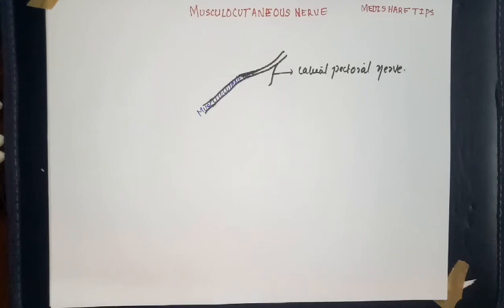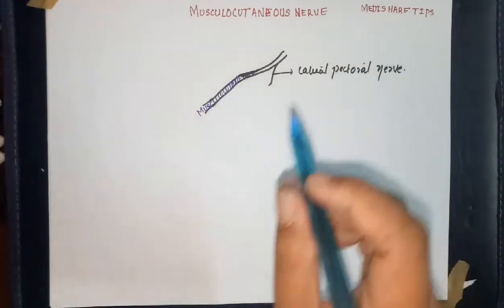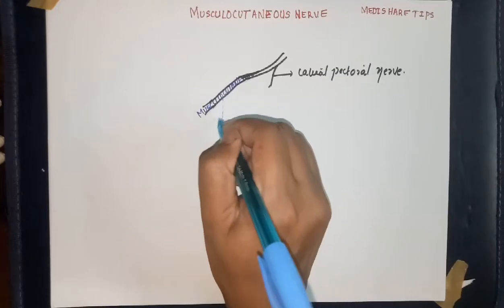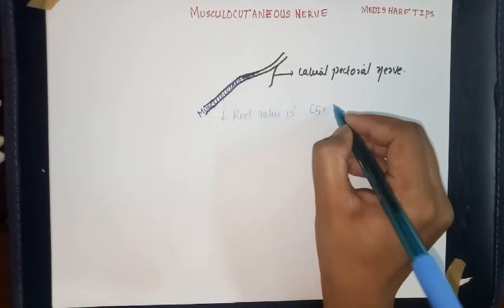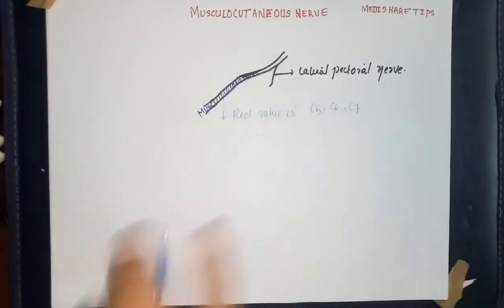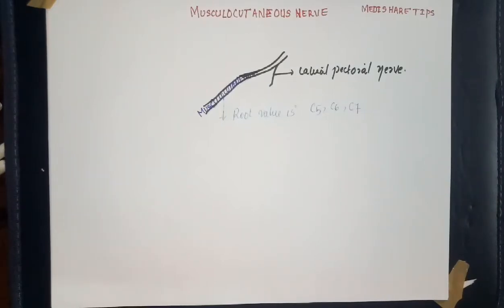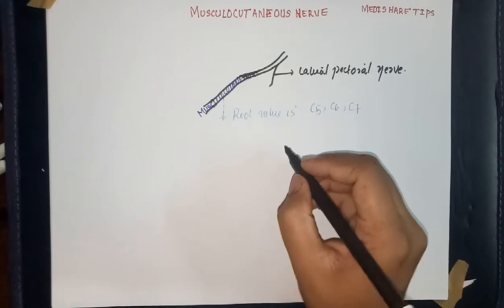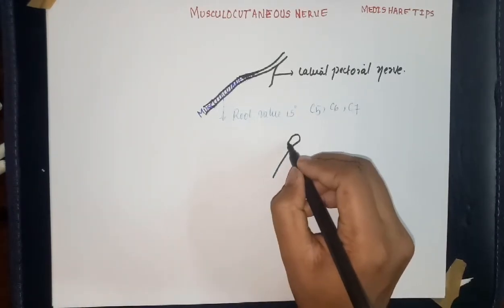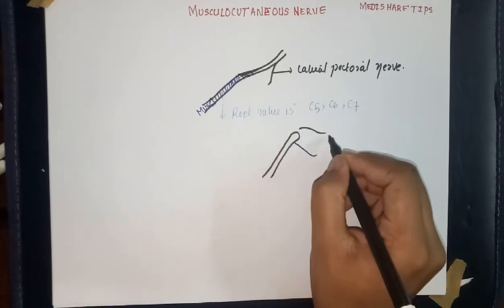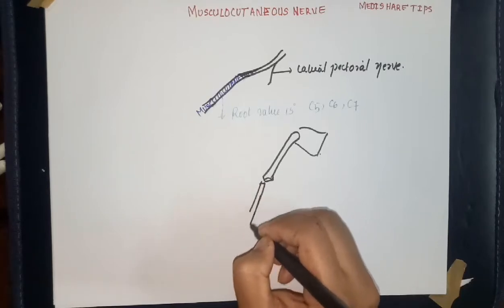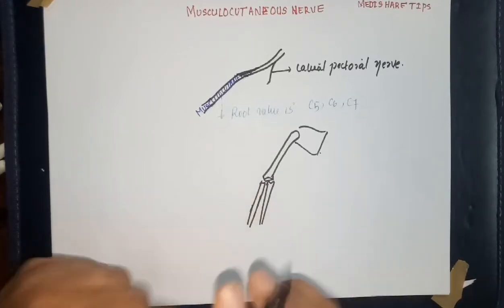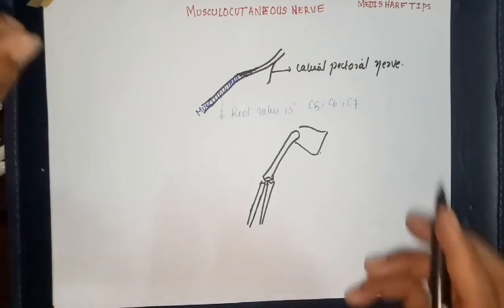As the lateral cord is formed from the anterior division of the upper and middle trunk, the root value of the musculocutaneous nerve is C5, C6, and C7.